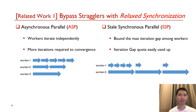In the research literature, the first strategy to handle stragglers is to bypass them with relaxed synchronization. Asynchronous parallel, or ASP, allows workers to iterate without waiting for others. However, workers may iterate with outdated parameters, and more iterations would be required towards model convergence. A follow-up method is SSP, which bounds the maximum iteration gap among workers. However, for long-lasting stragglers, the quota on iteration gap can easily be exceeded, and SSP would then downgrade to BSP.